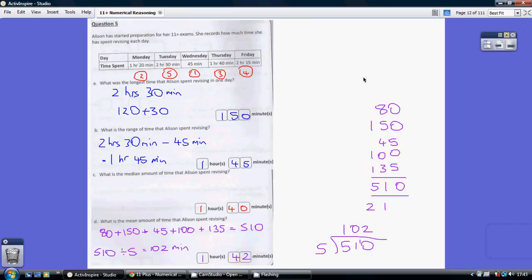Question 5, part A: what was the longest time that Alison spent revising in one day? Which of these is the biggest? Well, Tuesday she worked the longest - she did 2 hours 30 minutes. We need to give our answer in minutes, so 2 hours is 2 lots of 60, which is 120, plus the 30, equals 150 minutes.